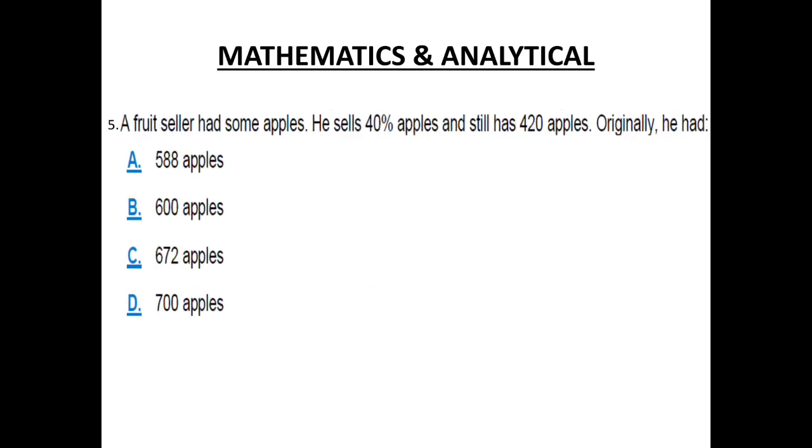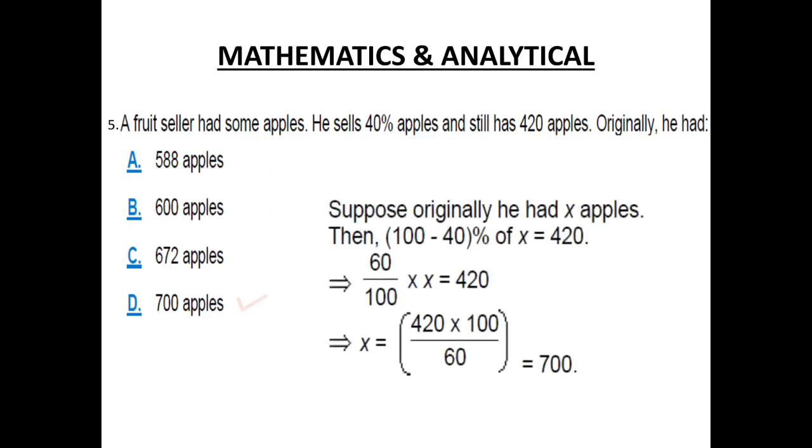Number 5. A food seller had some apples. He sells 40% apples and still has 420 apples. Originally he had how many apples? The 420 that is remaining is actually 60%. So originally he had 700 apples. Suppose originally he had X apples then 100 minus 40% of X equals 420. 60 divided by 100 into X equals 420. So X equals 420 into 100 over 60 equals 700 which is option D.